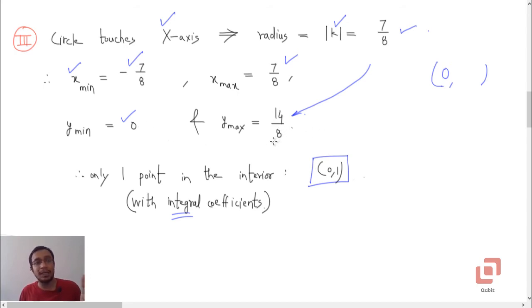Now how many integers are there between 0 and 14 by 8? See, we have been asked to determine points in the interior, so we are not interested in this point or origin, although origin lies on that particular circle. Now what is the maximum value? 14 by 8. So clearly 16 by 8 is ruled out, so we are going to consider only those points whose y-coordinates are equal to 1. So, taking the intersection of these two sets, we get only one such point that is 0, 1. Now let us verify our result graphically.